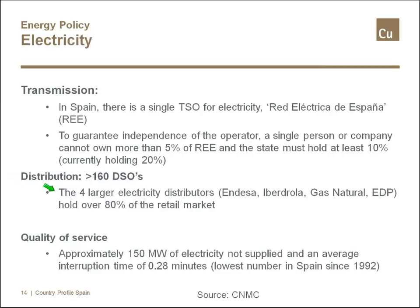At the distribution level, there are four large electricity distributors — Endesa, Iberdrola, Gas Natural, and EDP — holding over 80% of the retail market, plus a number of smaller companies. On quality of service: about 150 megawatts of electricity were not supplied last year, corresponding to an average interruption of 0.3 minutes — a very low number and even the lowest in Spain since 1992.